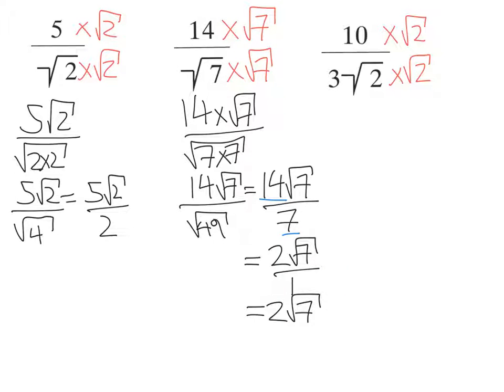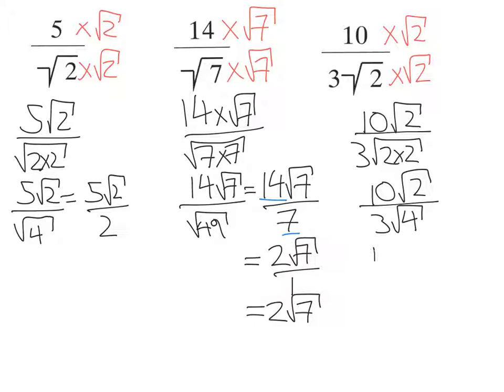That would leave me on the top 10 root 2. On the bottom, 3 square root 2 times 2. So I've got 10 root 2 over 3 root 4. So 10 root 2 is still on the top. 3 root 4, well that's 3 times root 4, and root 4 is 2, so that's 3 times 2.